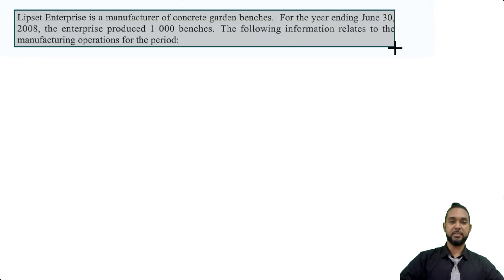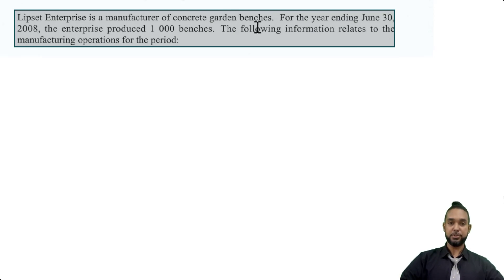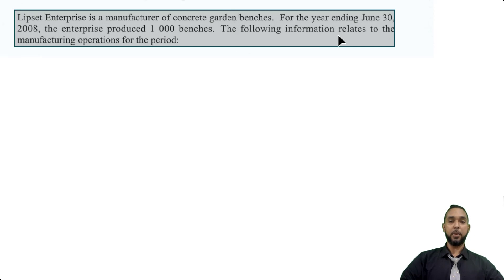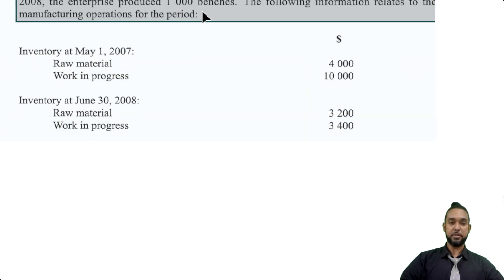They start off by telling us that Lipset Enterprise is a manufacturer of concrete garden benches. With the year ending June 30th, 2008, the enterprise produced a thousand benches. The following information relates to the manufacturing operations for the period.